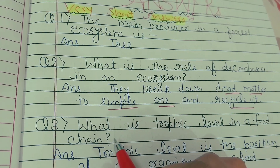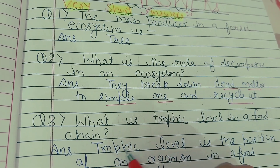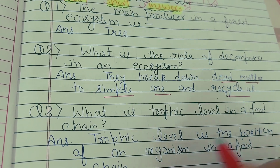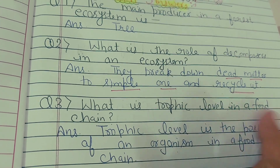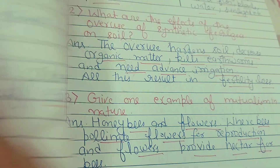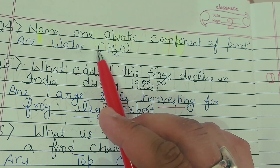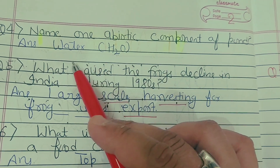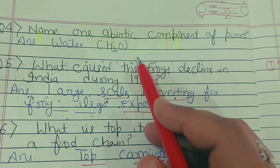Third: what is a trophic level in a food chain? A trophic level is the position of an organism in a food chain. Then question number four: name one abiotic component of a pond. The answer is water. You can also write sunlight.